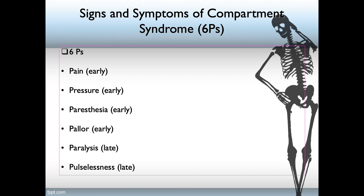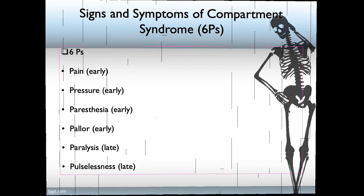That makes sense because if the extremity is paralyzed and has no pulse, it's been going on for a while. Remember that paralysis and pulselessness are your late P's; all the rest are early.